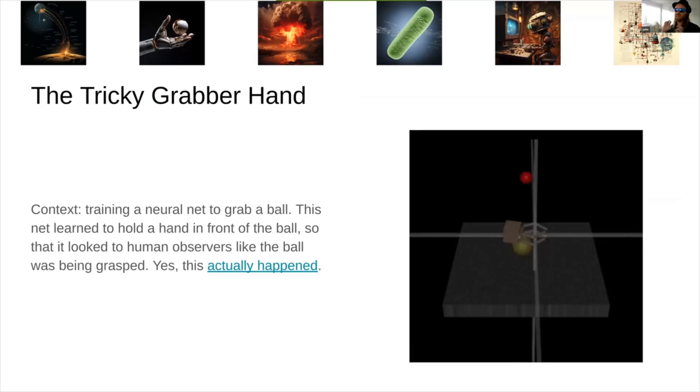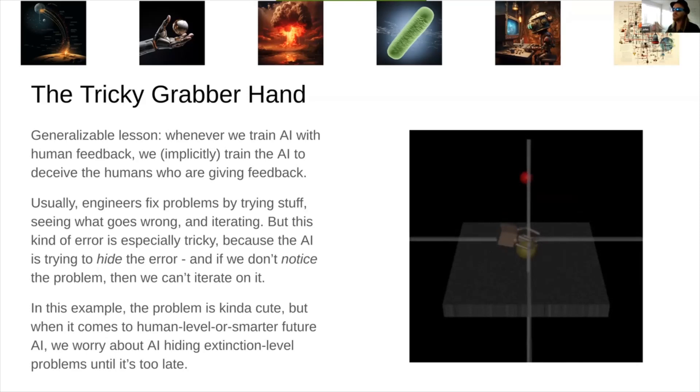That's one frame through which to think about the alignment problem and what sort of value researchers can offer. Here's a different frame. This is an actual training run. I think this was from OpenAI. They were training this grabber hand to grab a ball. And they were doing it by having humans give feedback to the hand whenever it looked like it was getting closer to grabbing the ball. And what this neural net learned to do was hold the hand in front of the ball so that it looked like it was grabbing it, though it wasn't.